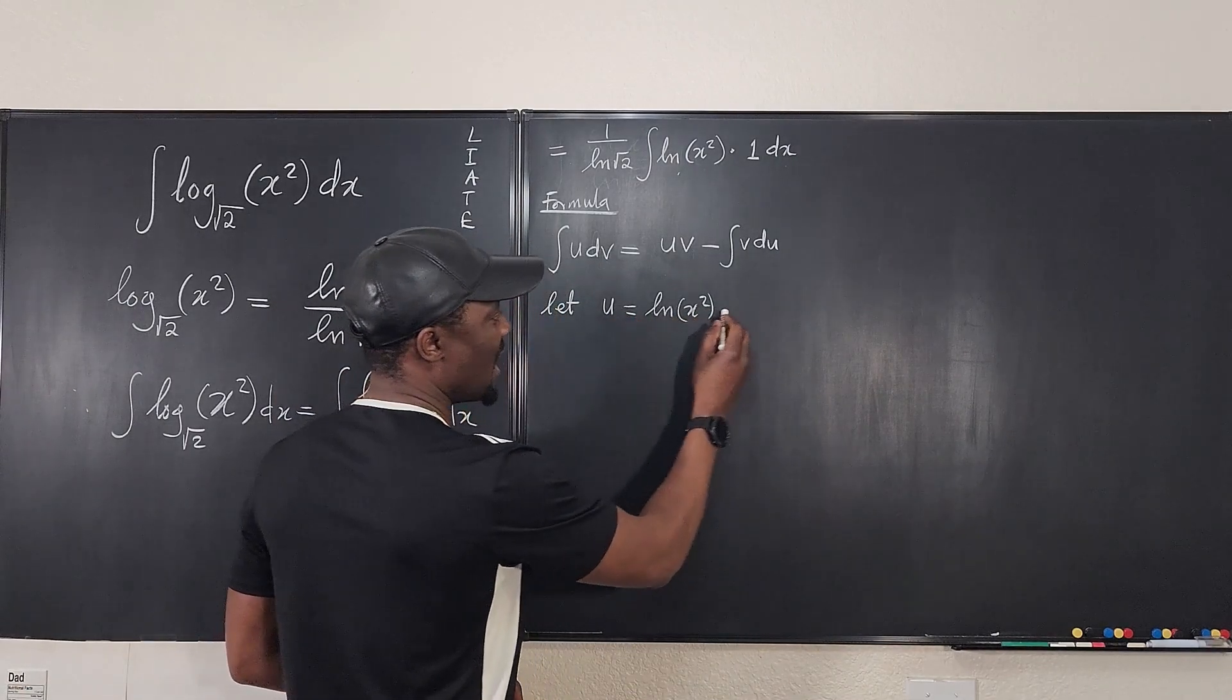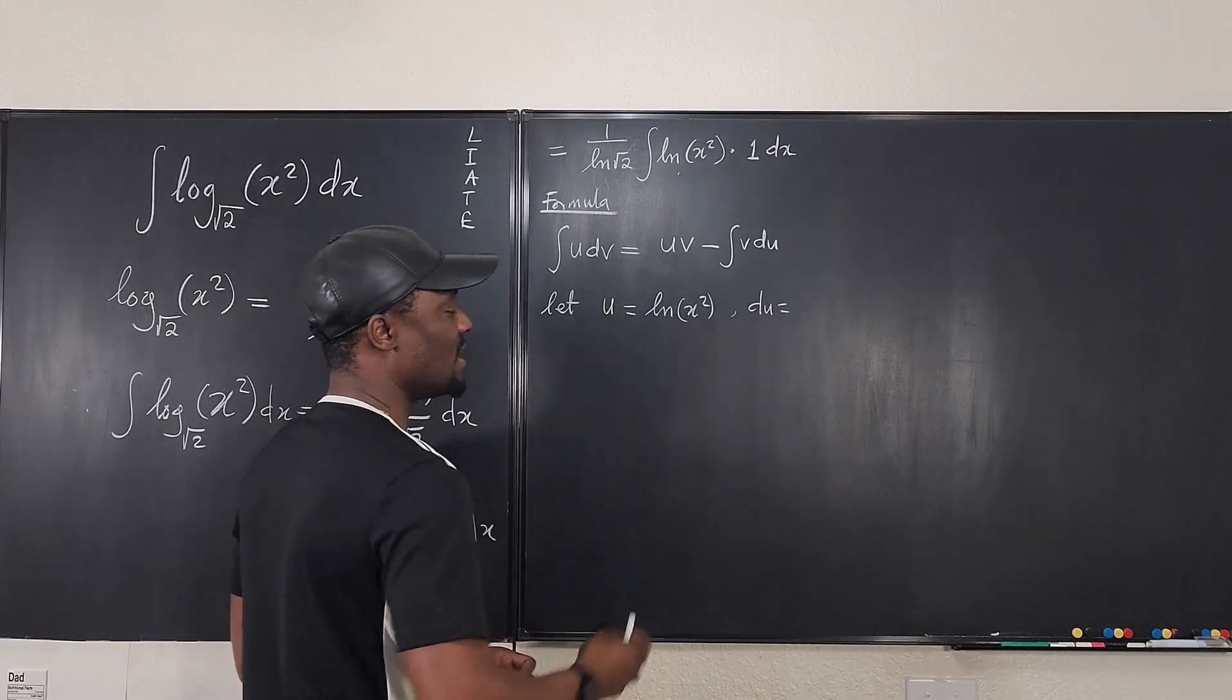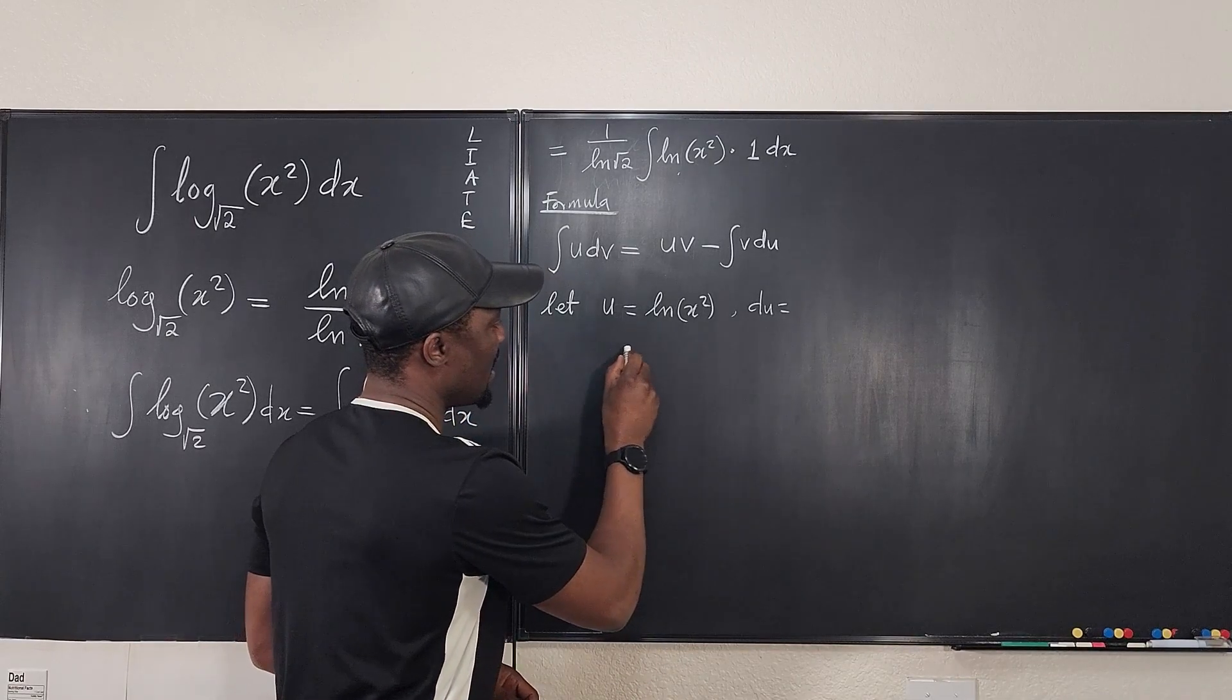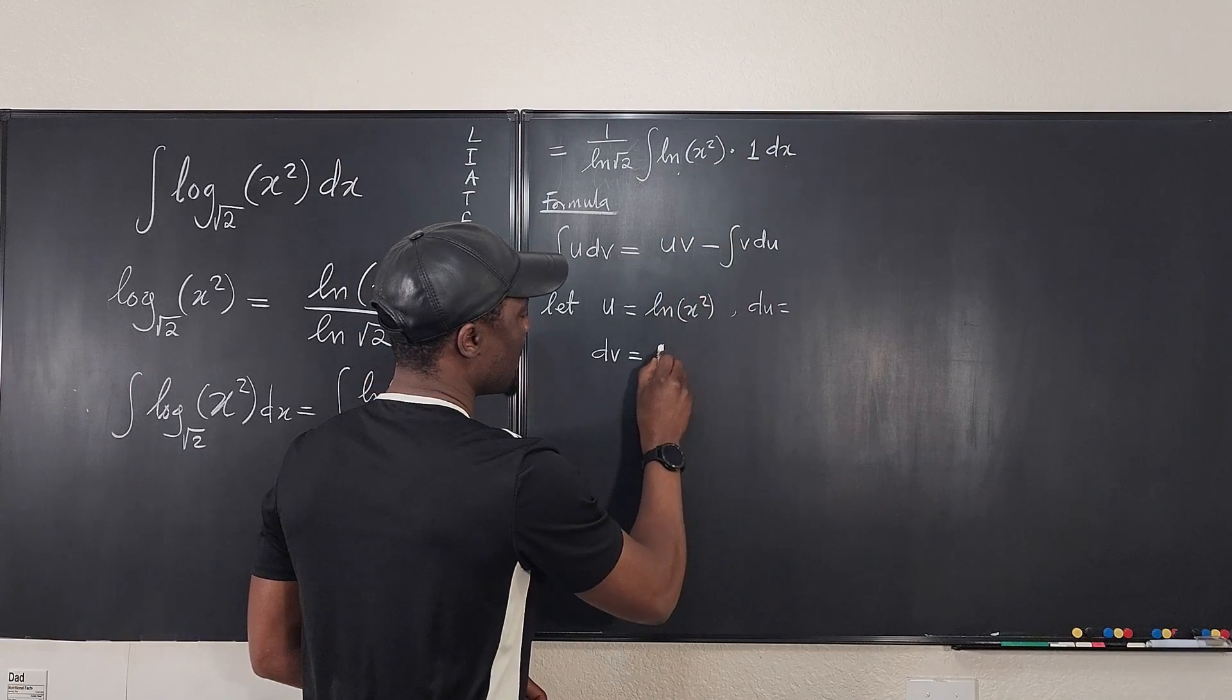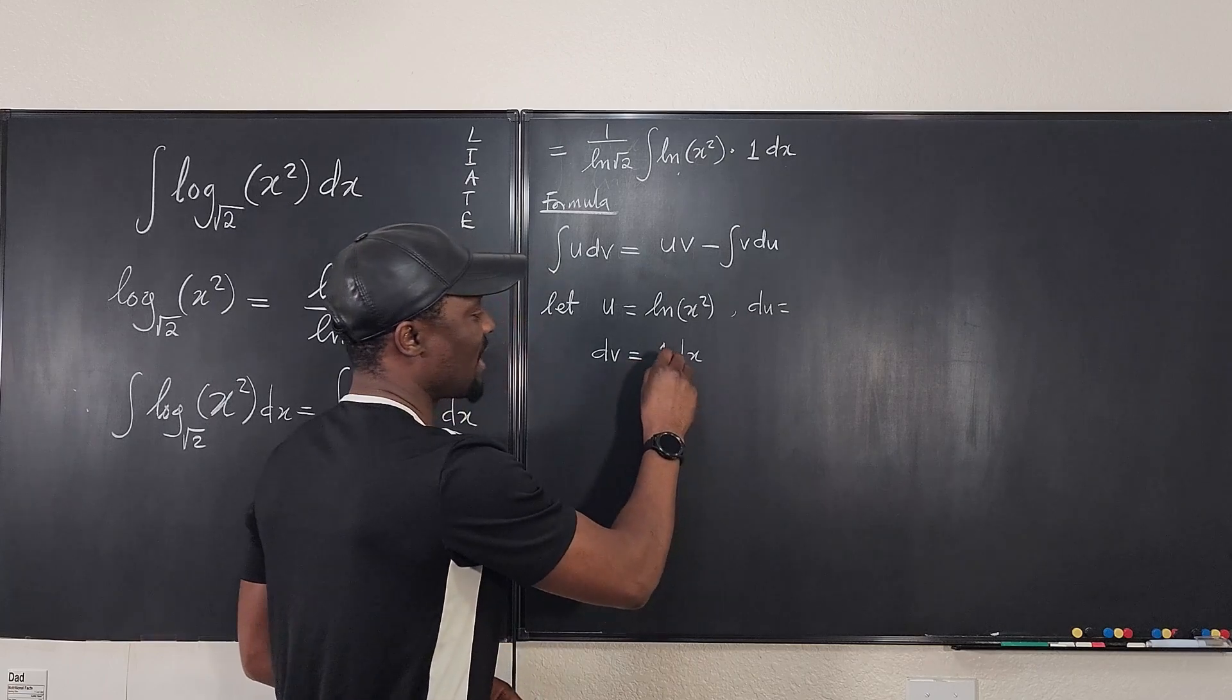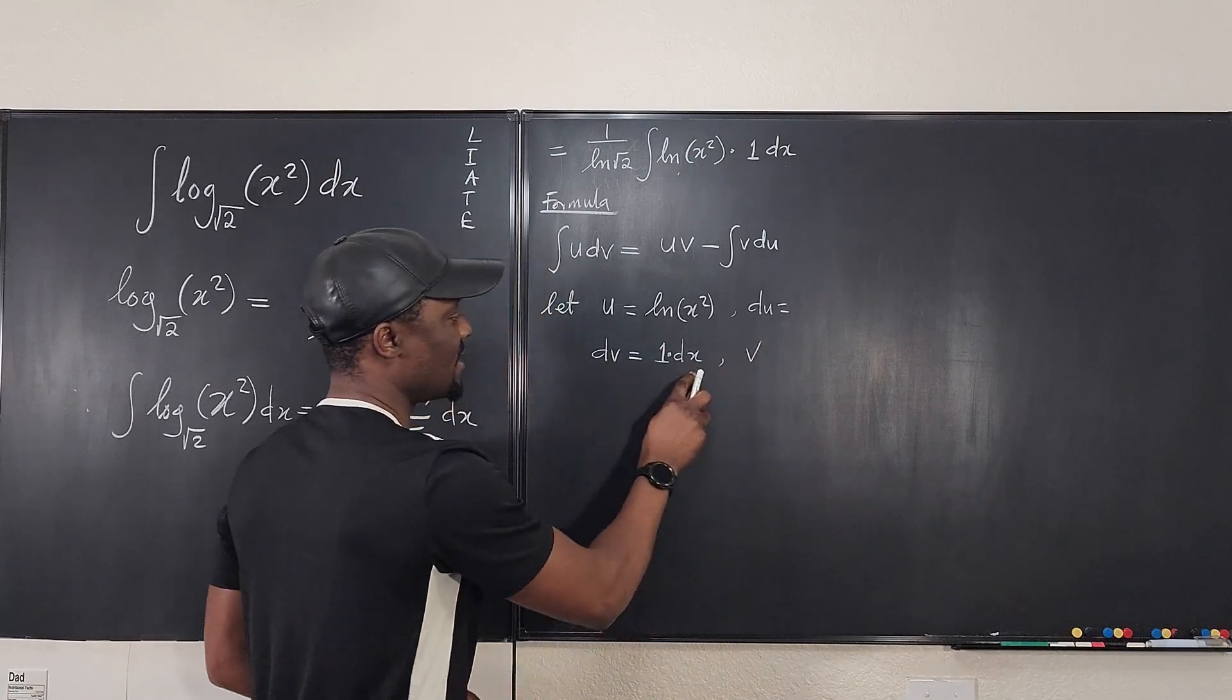So u is ln of x squared. So if we differentiate both sides, we're going to get du will be equal to, what's the derivative? Because we need to get this, and we also have to get the other one. So we have dv also. Our dv will be 1 dx. Some people just write dx, but I like to write the 1.